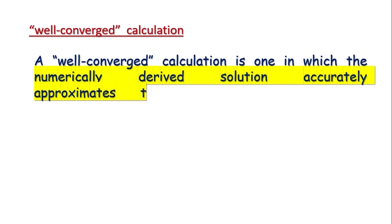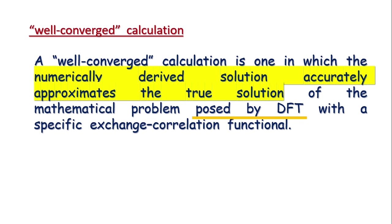A well-converged calculation is the one in which the numerically derived solution actually approximates the true solution of the mathematical problems as posed by DFT with a specific exchange correlation functional. Of course, if you are using DFT, you have a specific exchange correlation functional. This means that we will call your results well-converged only if it accurately approximates the problems as posed by DFT.